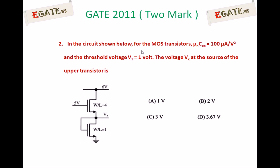Looking at the circuit diagram, µn·Cox is the process transconductance, generally indicated as Kn for n-channel MOSFET transistors and Kp for p-channel MOSFET transistors. In this circuit both are n-channel MOSFET transistors. The upper NMOS transistor has its gate at 5 volts; the lower NMOS transistor has gate and drain shorted. The W/L ratio of the upper transistor is 4 and of the lower transistor is 1.